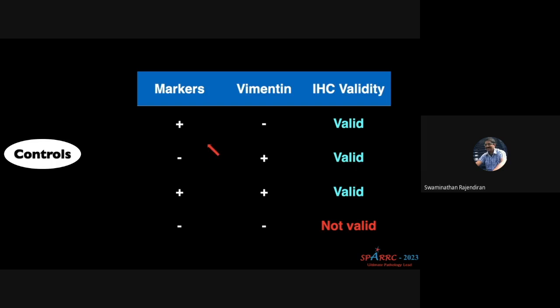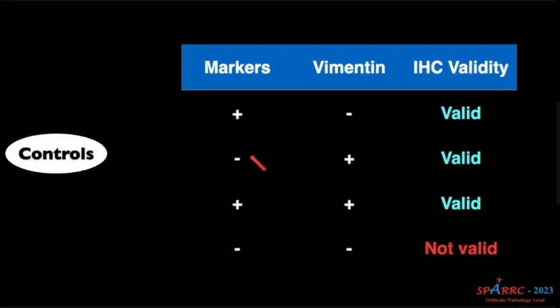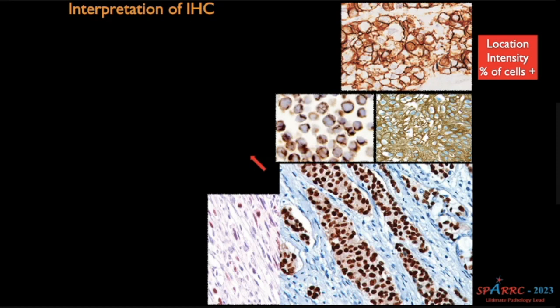Antigenicity control: if you are running 20 markers on a tumor and all markers are negative, you need to know whether the cell is displaying antigen at all. If vimentin is also negative, those cells may not be showing antigen, or the antigen was destroyed during processing. Run vimentin alongside your markers — if vimentin is also negative, that IHC run is not valid. If all markers are negative but vimentin is positive, that means we need to increase the number of tests to identify the antigen.